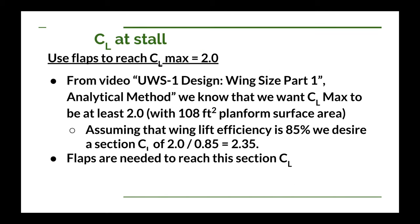Now it's time to talk about the coefficient of lift of our wing at stall. I've decided to use flaps on the wing in order to reach a maximum coefficient of lift of at least 2.0 when we're at stall. Referring back to our wing size video for the UWS-1 design, I came up with a surface area of 108 square feet, which gave us a lift coefficient of 2.0. But we're going to be looking at the section characteristics of airfoils. Almost always your coefficient of lift for the wing is going to be lower than the coefficient of lift for the airfoil sections.